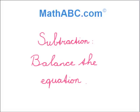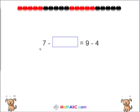Subtraction. Balance the equation. We see here the problem 7 minus something equals 9 minus 4. Well first we need to solve this problem here, 9 minus 4, and then we'll be able to figure out what number should go in this box. What is 9 minus 4?